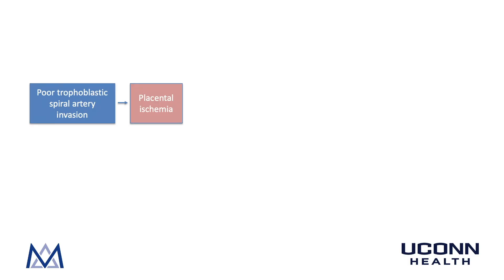It is thought that poor trophoblastic spiral artery invasion is the first step in the pathophysiologic cause of preeclampsia. This causes the spiral arteries to maintain a high vascular resistance and eventually leads to placental ischemia.